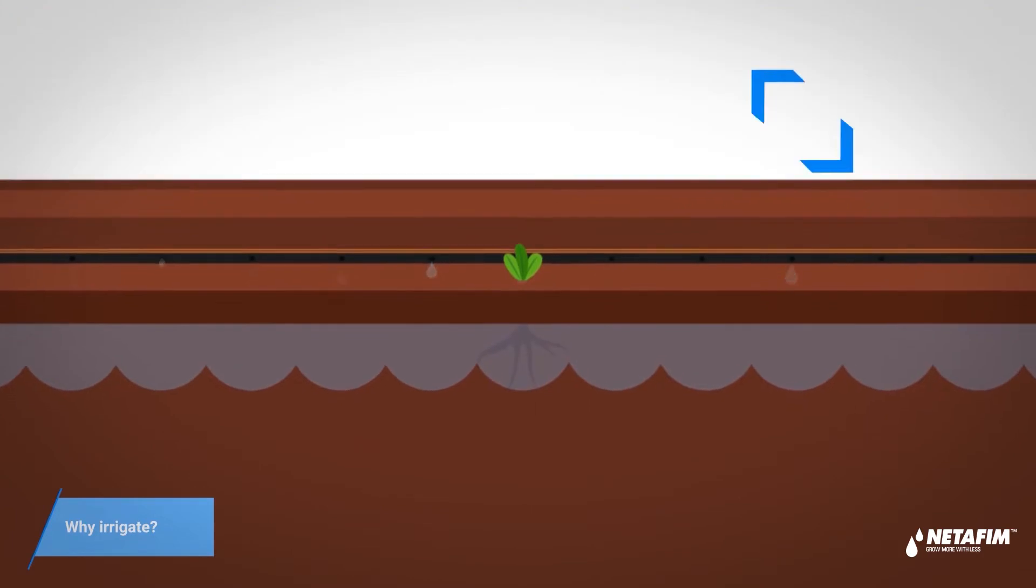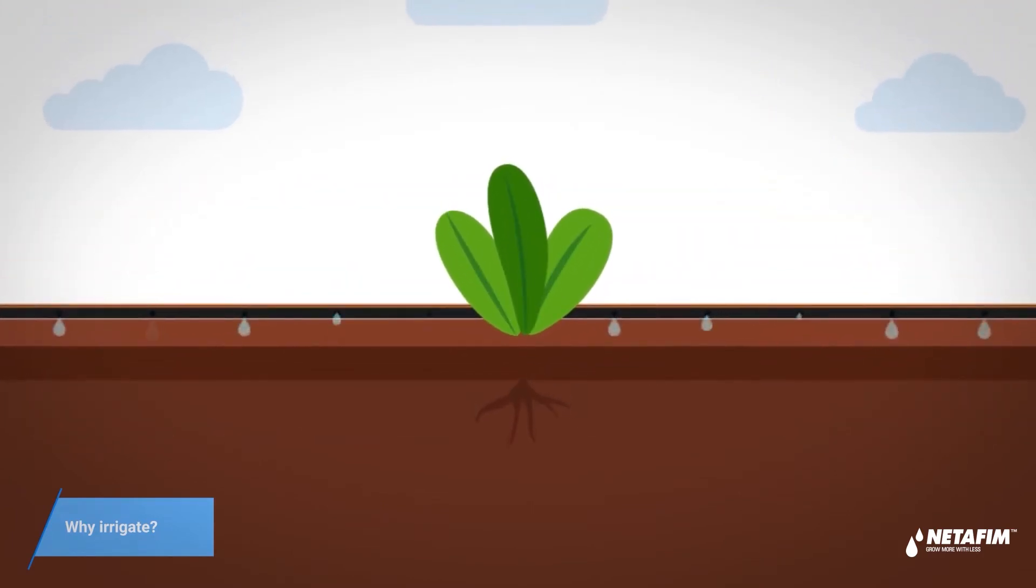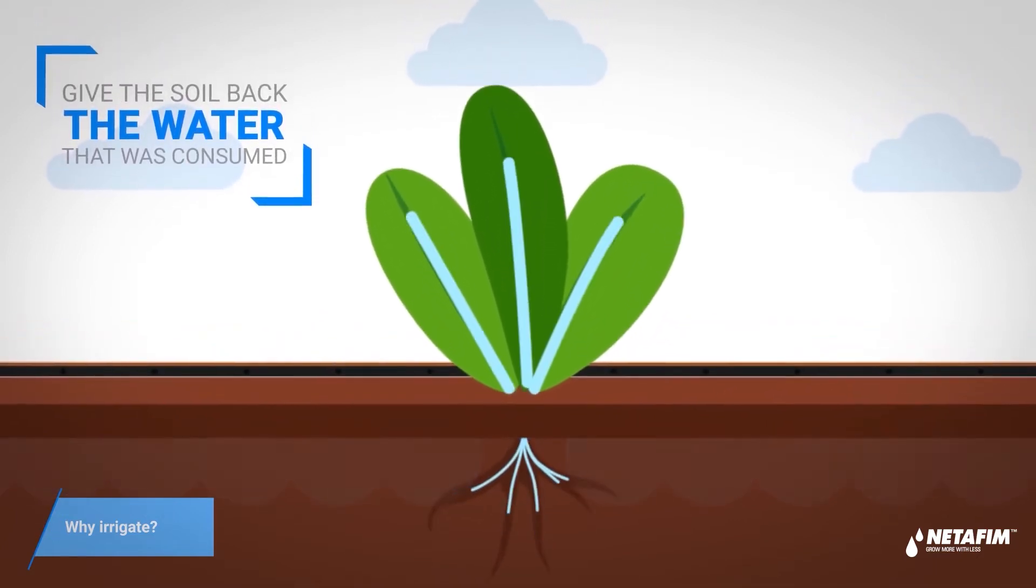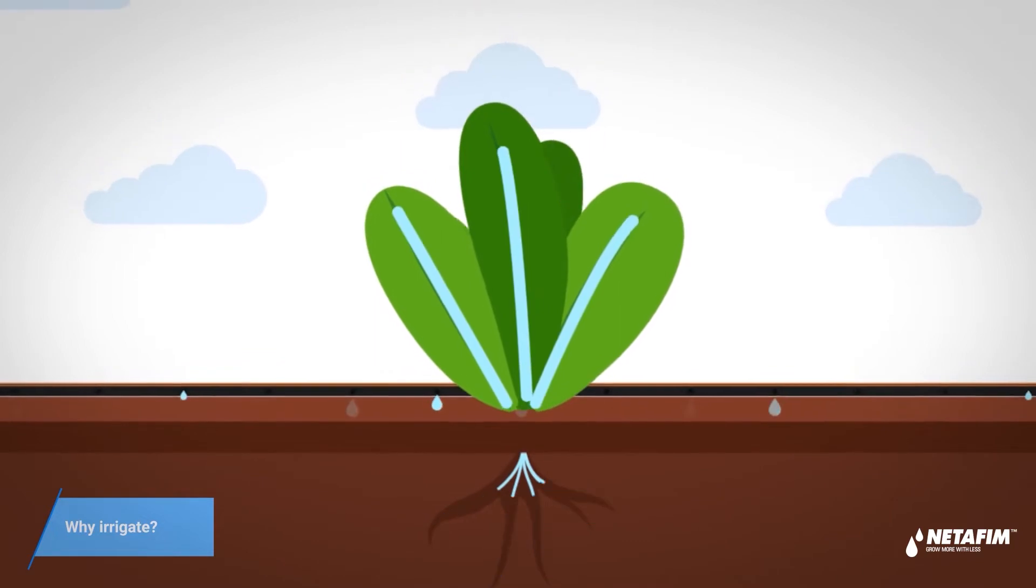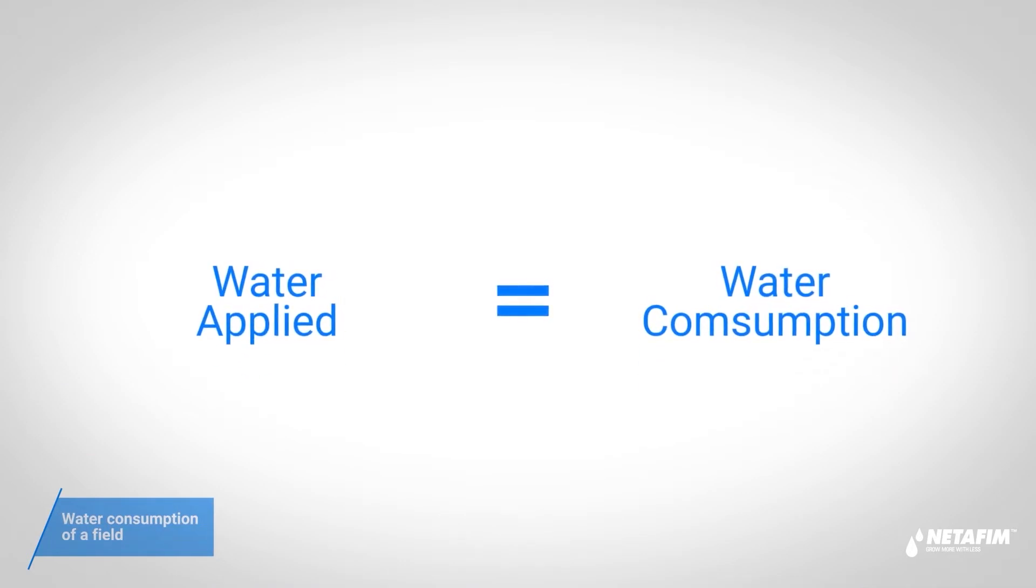Soil has a capacity to hold water and plants consume that water. Our job is to give the soil back the water that the plants have consumed. This way your plant never dries out and won't suffer from stress. Okay, so that's clear - we need to apply the amount of water the crop is consuming in order to stay balanced. But how do we calculate field's water consumption?